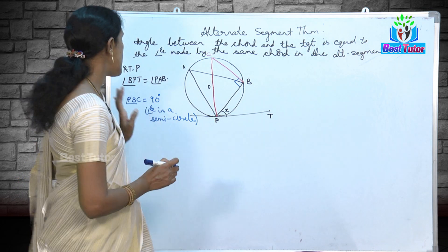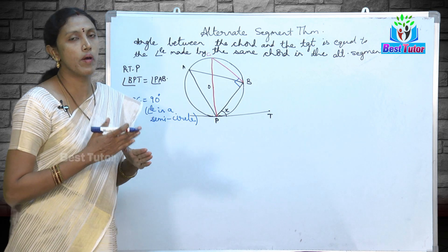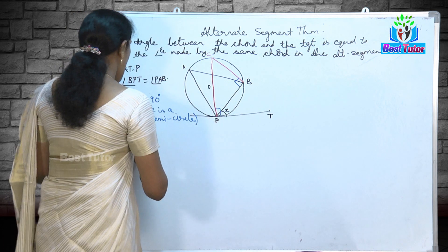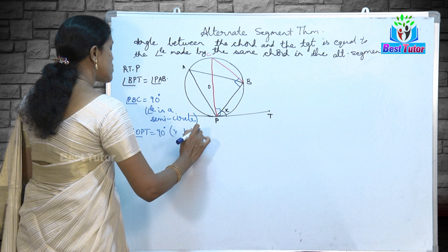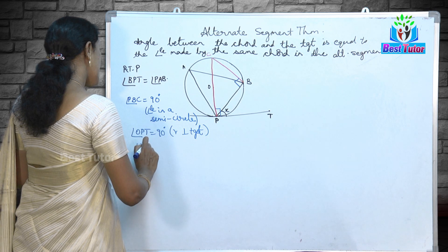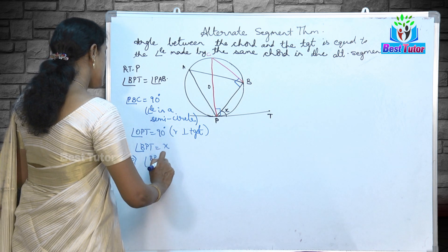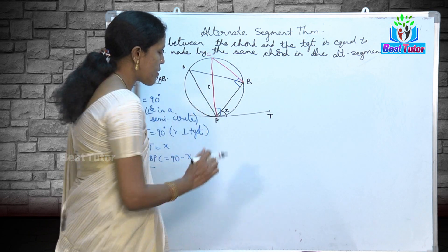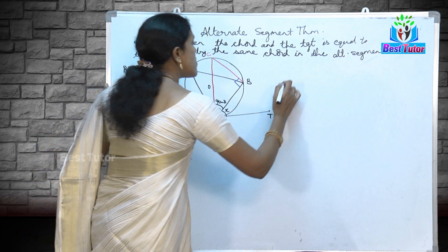Now, OP is the radius and PT is the tangent. We have already learned that the radius is perpendicular to the tangent at the point of contact, so angle OPT equals 90 degrees. If angle BPT equals x, then angle BPC equals 90 minus x, since the complete angle CPT is 90 degrees.